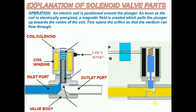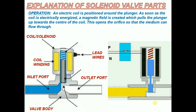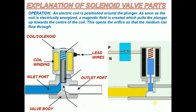Lead wires — these are external connections of the solenoid valve that are connected to the electrical supply. The current is supplied to the solenoid valve from these wires. When the solenoid valve is energized, the current flows through these wires to the solenoid valve, and when the solenoid valve is de-energized the flow of current stops.